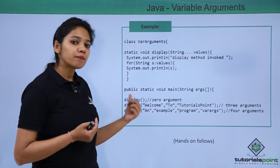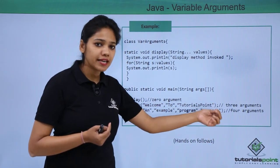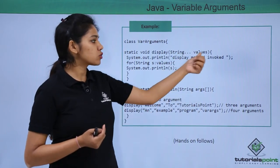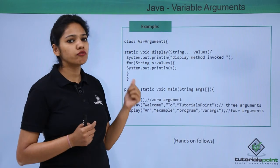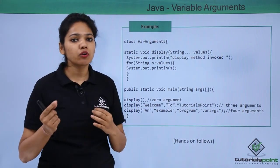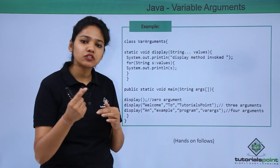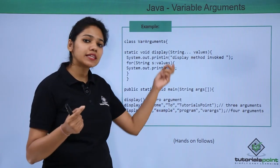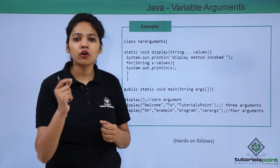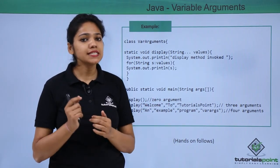Similarly, we call the same display method with four arguments: 'an example program of varargs'. Each argument is again stored in the values array and iterated by the for-loop. The main advantage of variable arguments is that it can accept zero or n number of arguments. You do not have to specify the length, and you do not have to overload the method again and again.